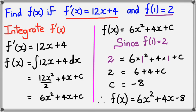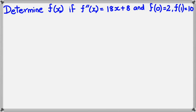Looking at another example, where we have f double dash of x. So in this case, we want to find out what f of x is, if f double dash of x equals 18x plus 8, and f of 0 equals 2, and f of 1 equals 10. So in the previous example, we actually did f dash of x. This time we're doing f double dash of x. So let's get started, and you kind of will see the pattern of how to do this.